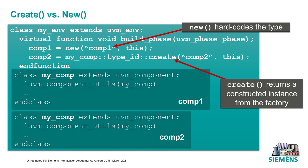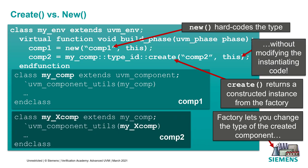There is a method associated with each type called create, and a thing called a wrapper — which is what type ID is — that allows us to get this information out of the factory. So instead of calling the constructor, we call the create method, giving us a different instance of myComp called comp2. The advantage of using the factory is that it allows us to override the type of component returned by the wrapper, so instead of a myComp, we get a myXComp. The environment code that's instantiating comp2 doesn't change at all.